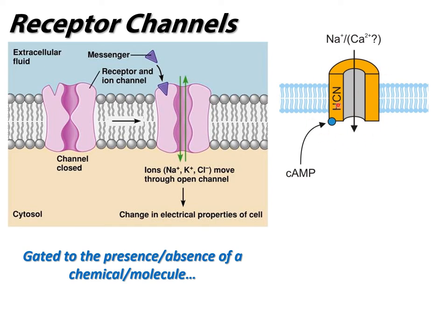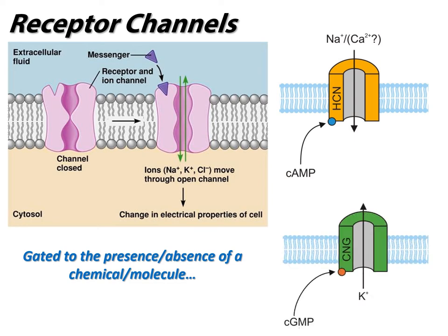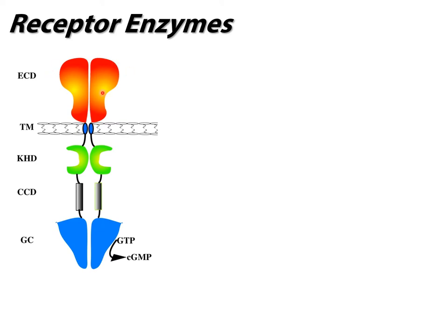Here's one gated for a different second message - cyclic GMP. G and A are actually quite similar structurally if we look at the nitrogenous base in those ribonucleotides, but this one is gated for GMP and releases potassium. The next category is receptor enzymes. These receptors, when activated, trigger some kind of enzymatic reaction. This receptor may be coupled with a channel - for instance, it creates cyclic GMP from GTP, and that cyclic GMP diffuses over to a receptor channel that's gated for cyclic GMP.